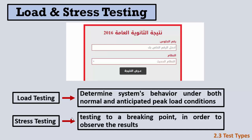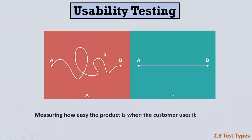Stress testing, on the other hand, tests to a breaking point. With 1000 students in the university, stress testing would test at 1000, 1100, and 1500 users — until the system breaks — to find its breaking point. Both types cannot be done manually, so we use tools that simulate user behavior.